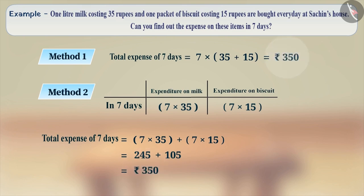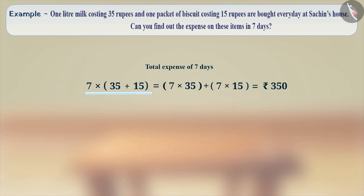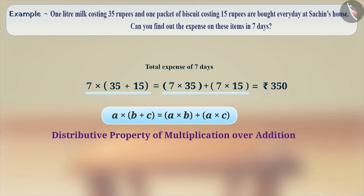Thus, the total expenditure obtained by both methods are the same. In this way, 7 into (35 plus 15) is equal to 7 into 35 plus 7 into 15. This is the distributive property of multiplication over addition.